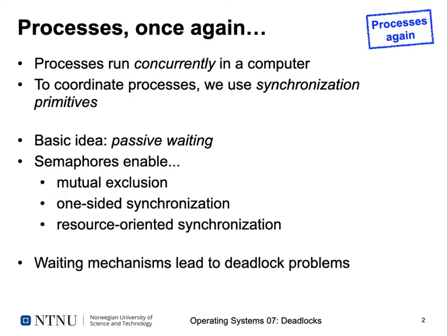We're revisiting processes once more. Processes run concurrently in a common computer with a common operating system, and to coordinate processes we have to use synchronization primitives such as mutexes or semaphores. The basic idea is to use passive waiting, which can be performed using semaphores. Semaphores enable mutual exclusion of critical sections, one-sided synchronization, or resource-oriented synchronization, as seen in our previous lecture.